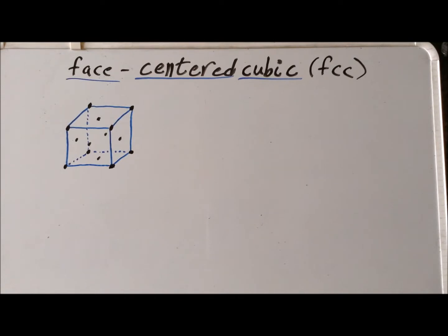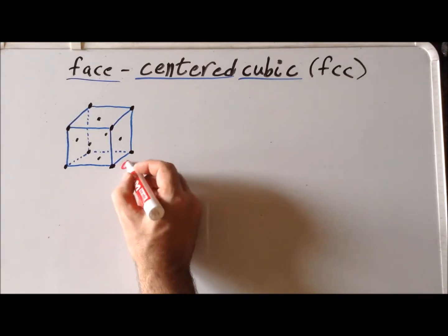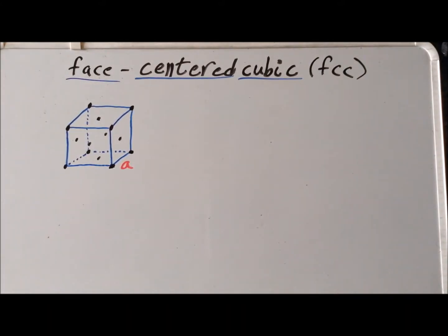For the face-centered cubic structure, there is only one unique parameter, and that is the edge length a for the cube, since we know that all the lengths of the cube are going to be a, and all the bond angles, all the angles of the cube are going to be 90 degrees.